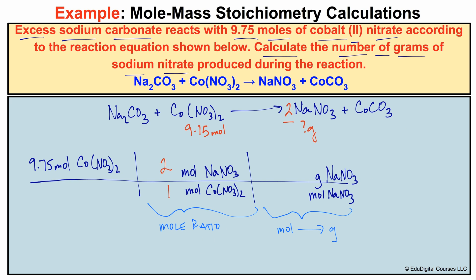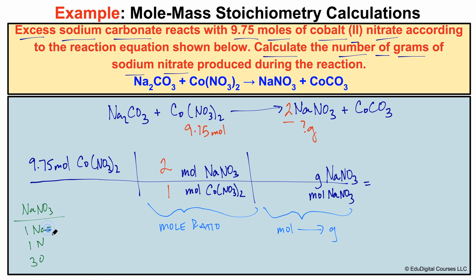Now we need to figure out the molar mass of NaNO₃. To do that, we identify each element in the compound: NaNO₃ is made up of sodium, nitrogen, and oxygen. There is one sodium atom, one nitrogen atom, and three oxygen atoms in this compound.